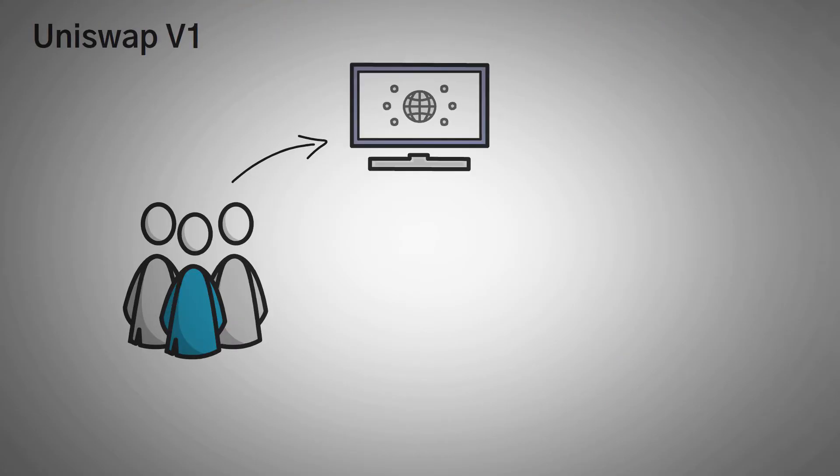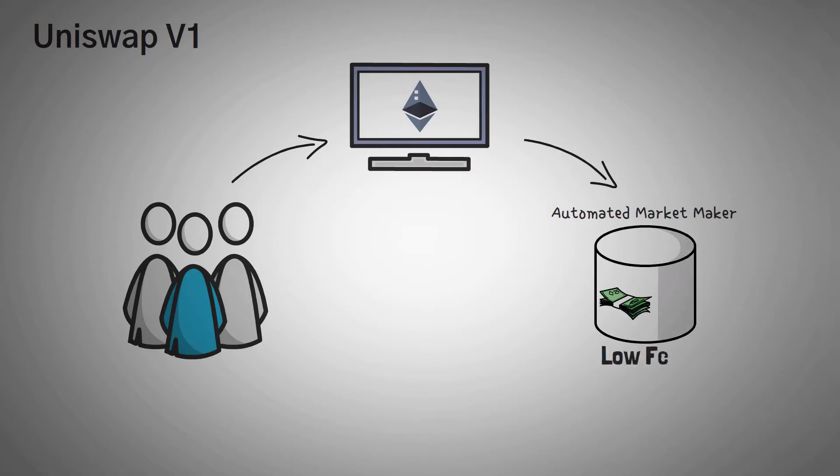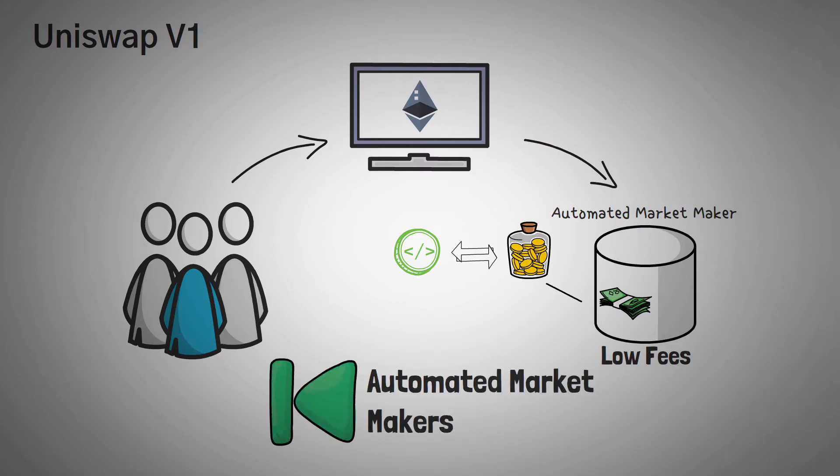Let's first go over Uniswap V1. Uniswap V1 allows traders on the Ethereum network to use a new system of trading called an automated market maker to allow traders to trade with a pool of money at any point in time with very low fees, and they could theoretically trade for an infinite amount of coins. First off, we have an amazing video on automated market makers that people have loved. You should definitely watch that video if you don't understand this next section.